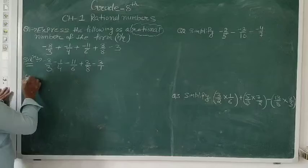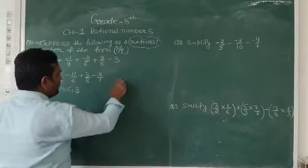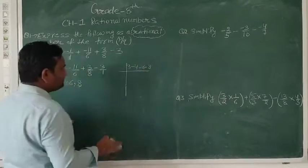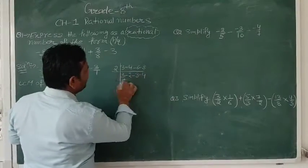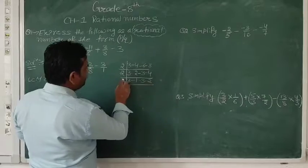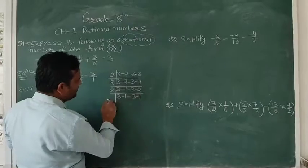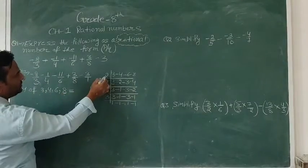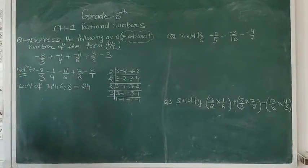We need to take the LCM of 3, 4, 6, and 8. Starting with 2: 2 divides 4, 6, and 8. Continuing the process, we get LCM = 2 × 2 × 2 × 3 = 24. So our LCM is 24.